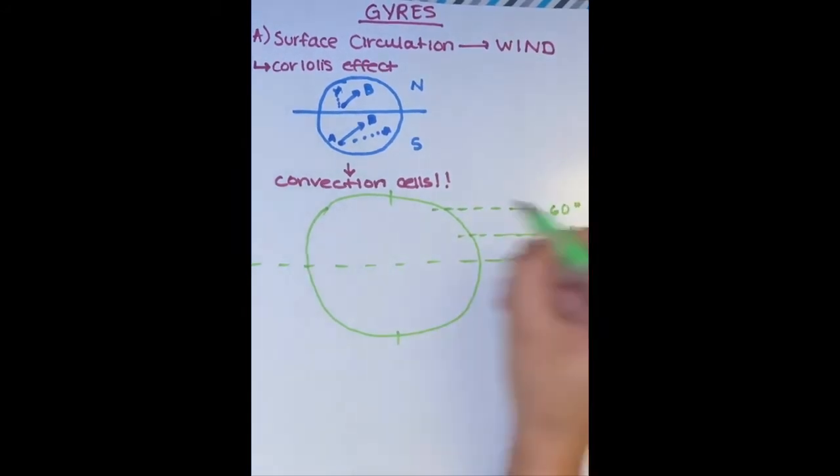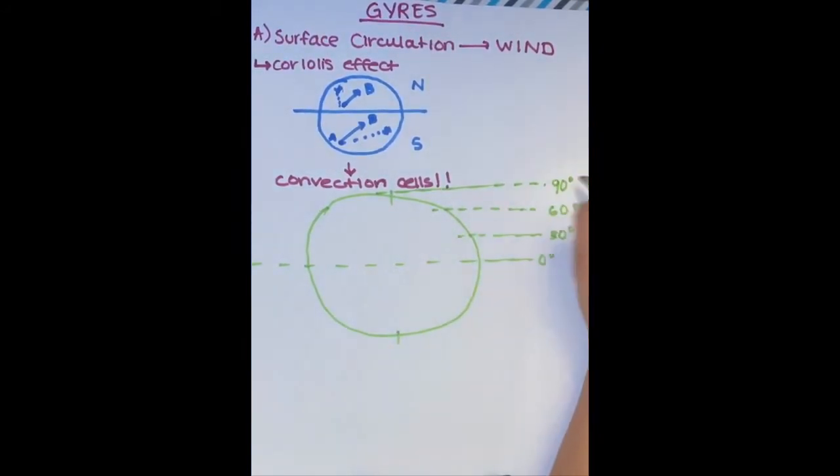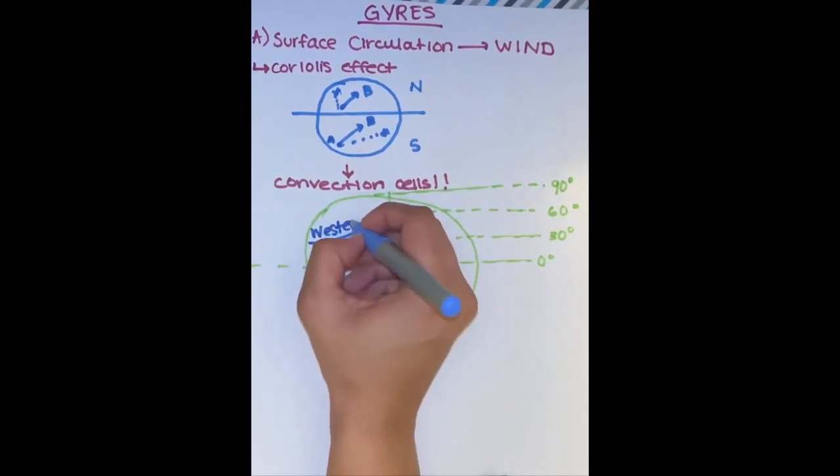There are two constant wind patterns that flow in opposite directions, the westerlies and the trade winds.